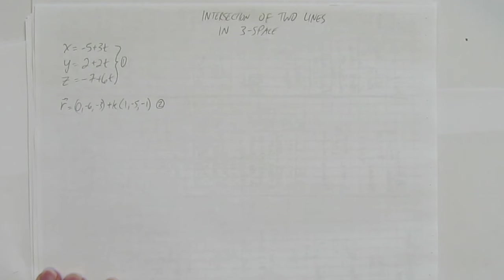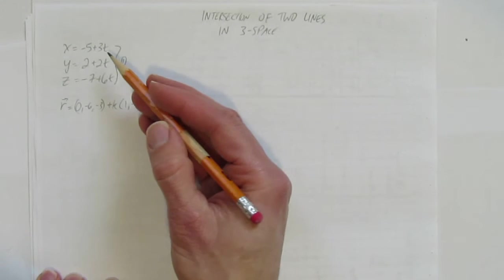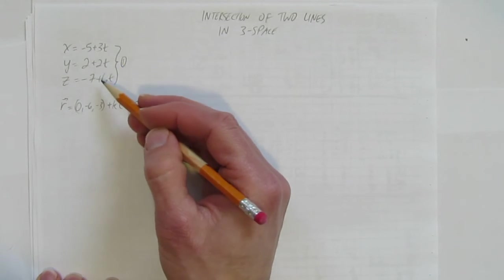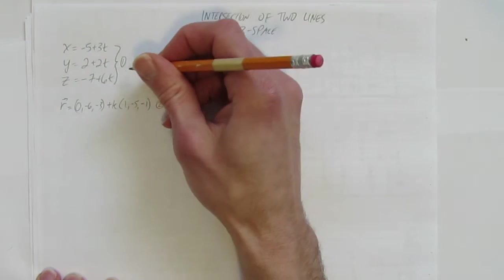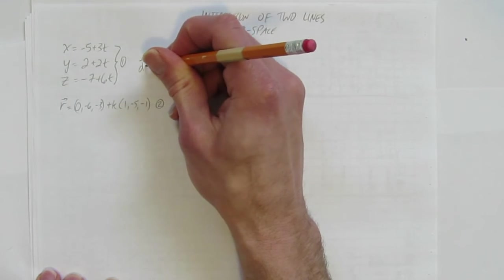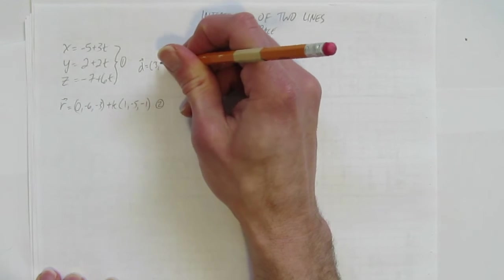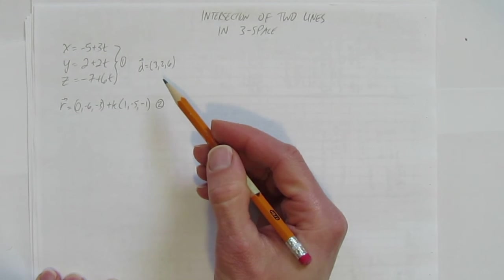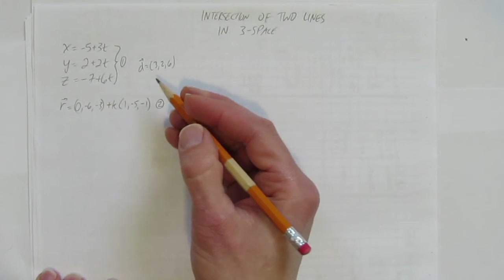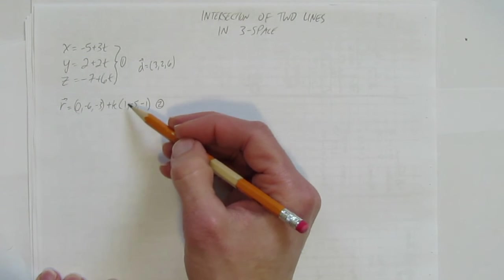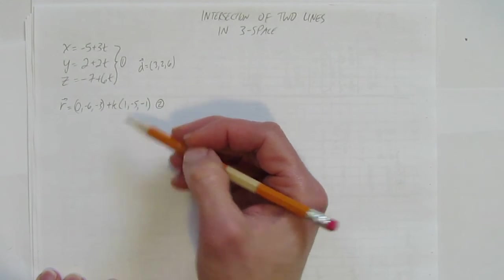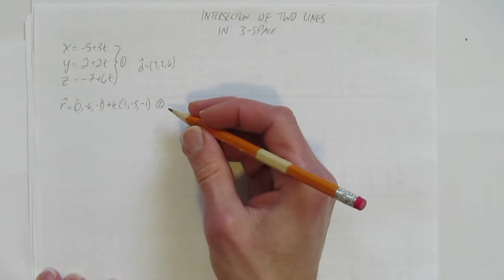Alright, we want to find where these two lines intersect. Well, it's worth pointing out first that we could observe the direction vector for this parametric equation. Its direction vector is (3, 2, 6). And the reason we did that is just to quickly observe that these lines are not parallel. Clearly, 3 to get to 1 you divide by 3, but 2 divided by 3 is not negative 5. So these are not parallel lines.